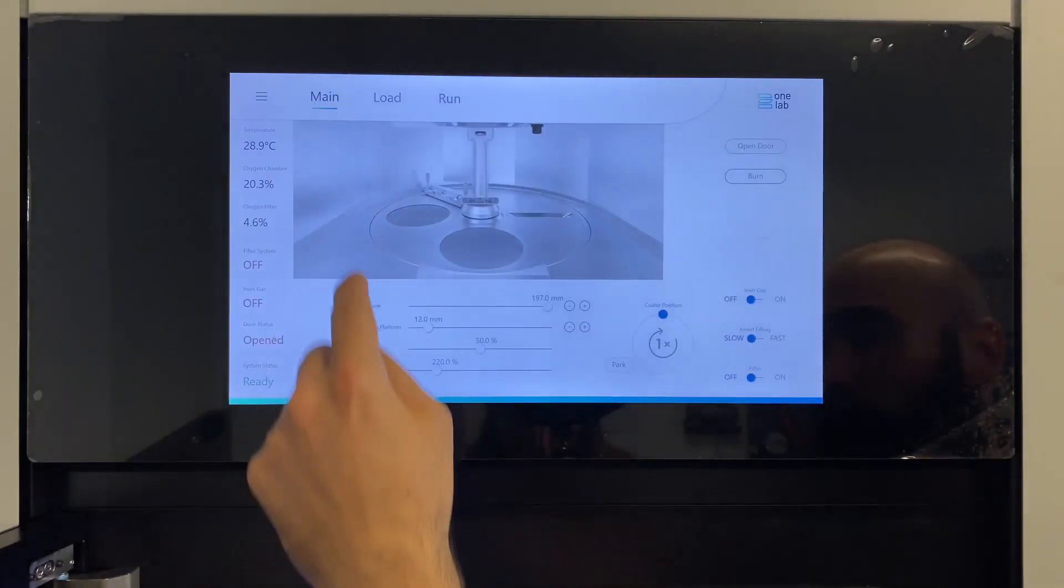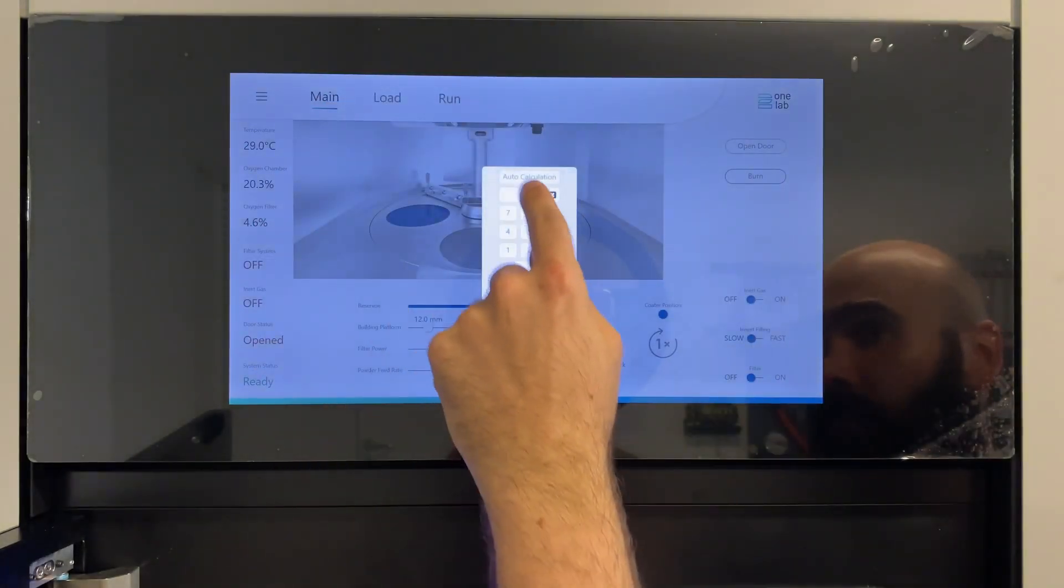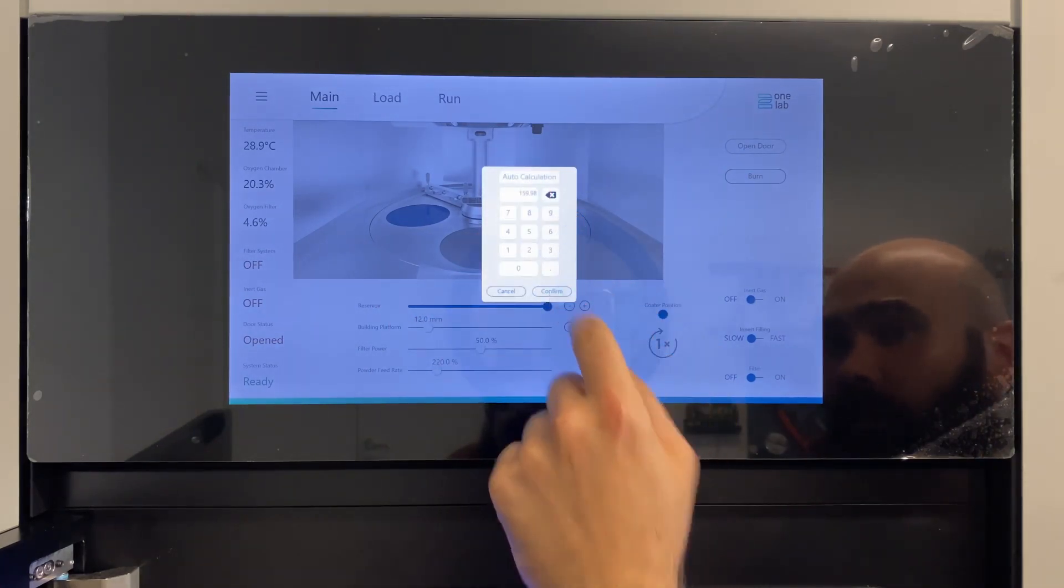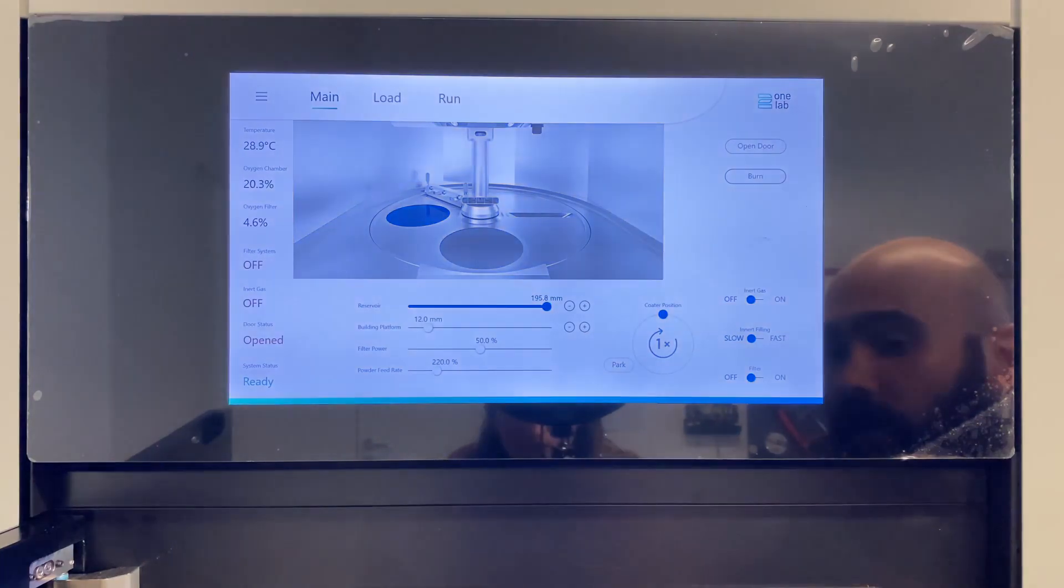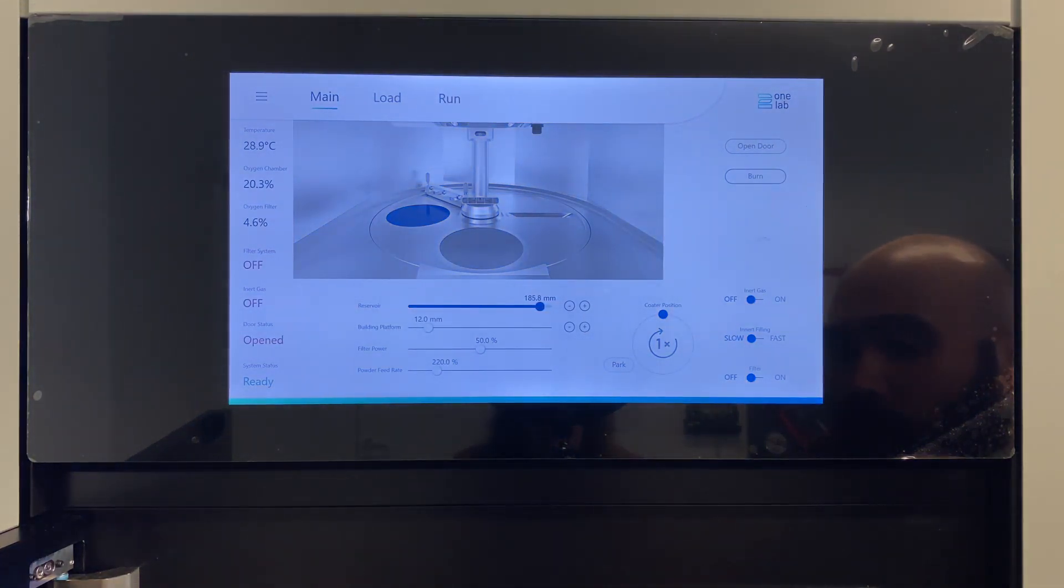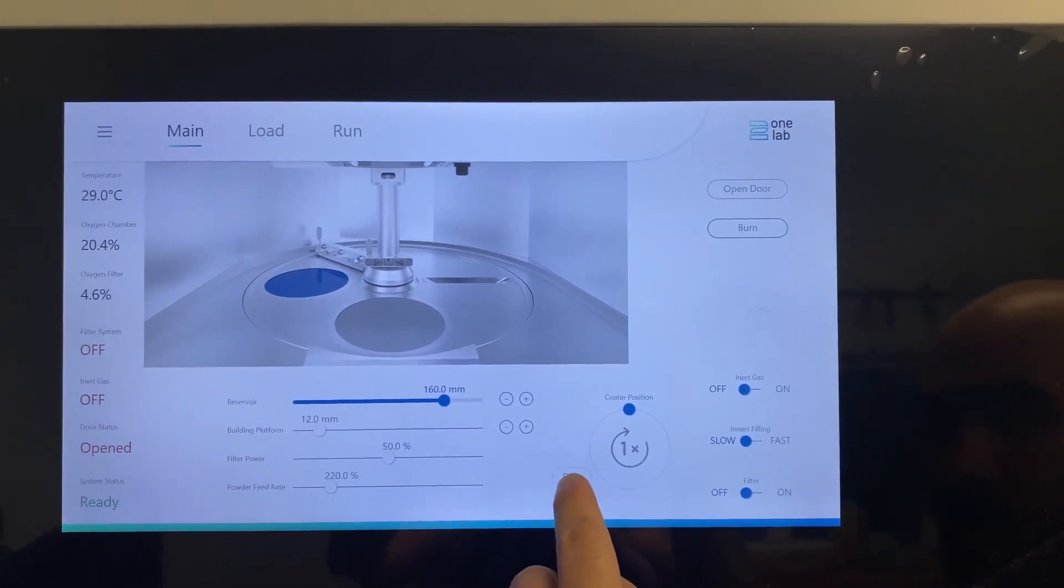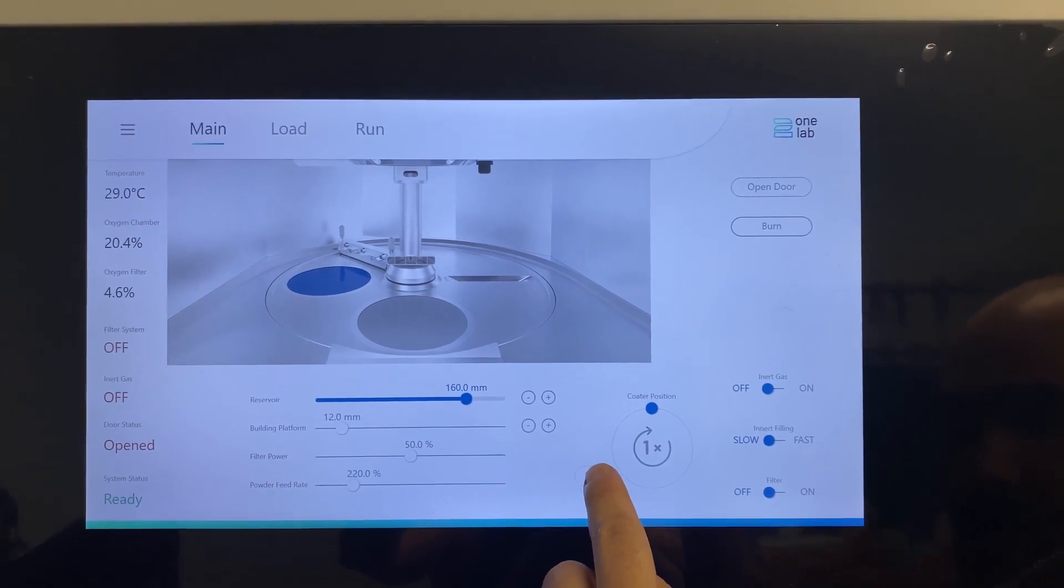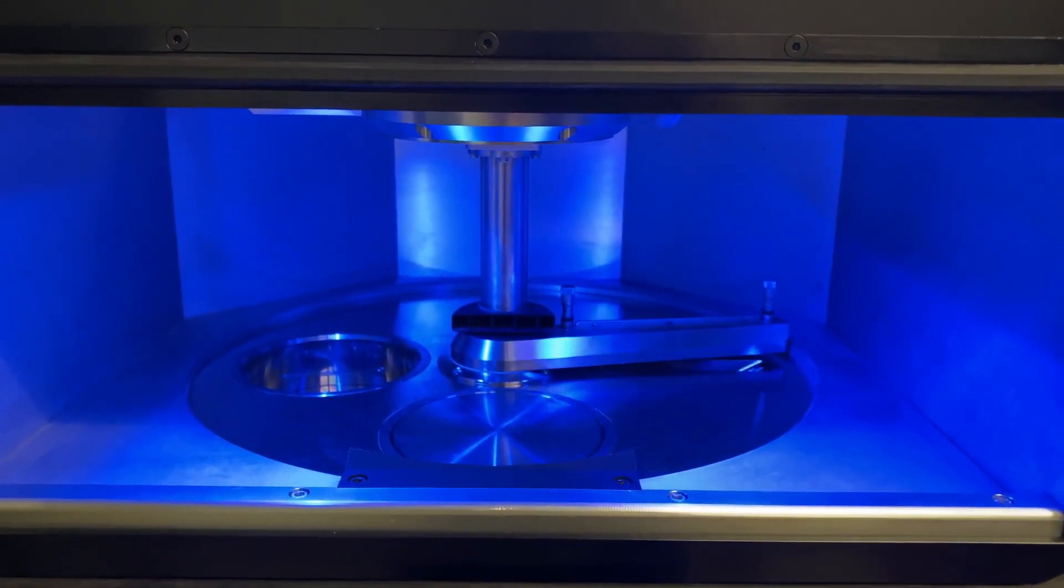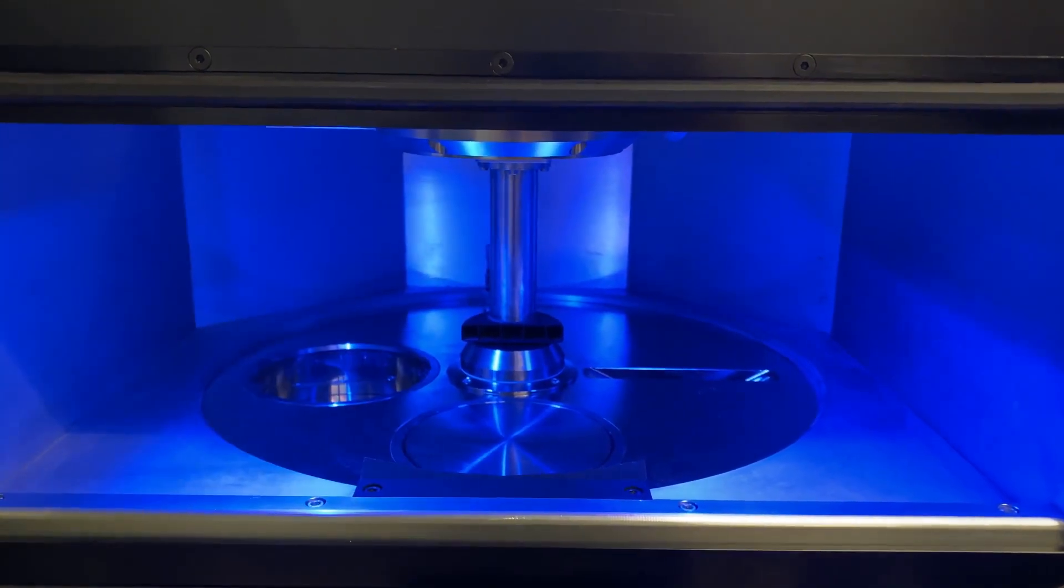Go back to the main tab, press double click on the reservoir and you do the auto-calculation. You see, now it confirms our height for the powder and will move directly to it. To fill in the powder, we need to park our coater on the other side by pushing the button. Now we have plenty of room to fill in the powder.